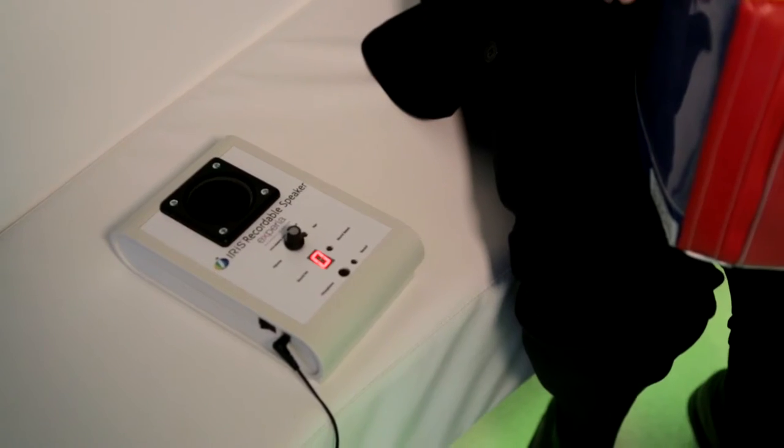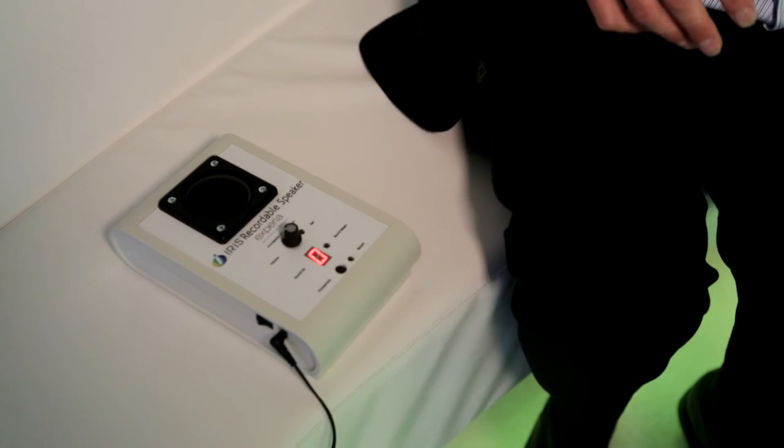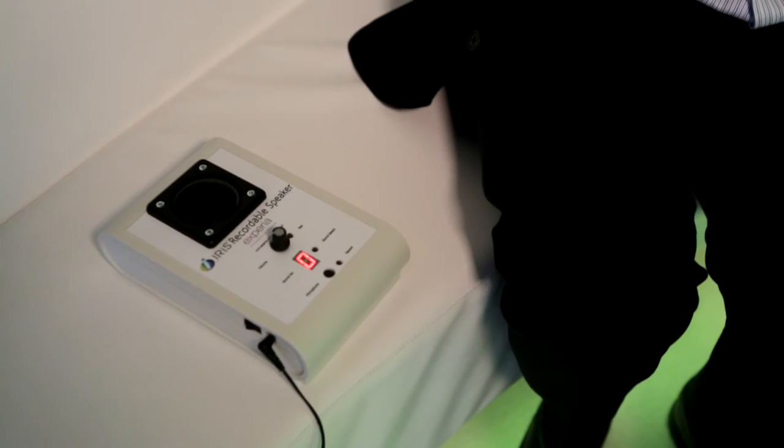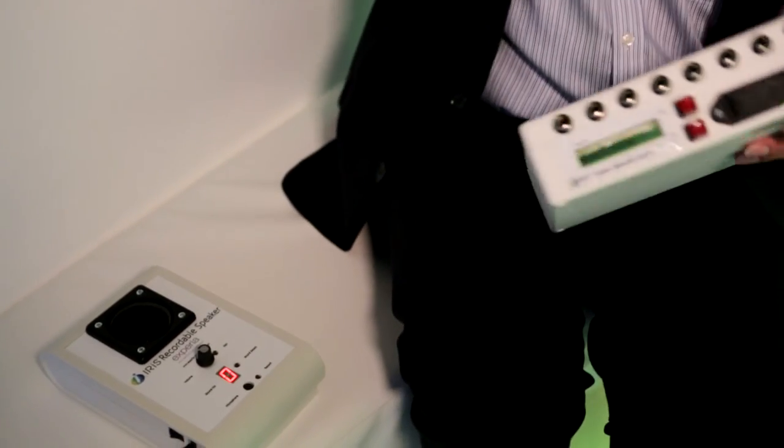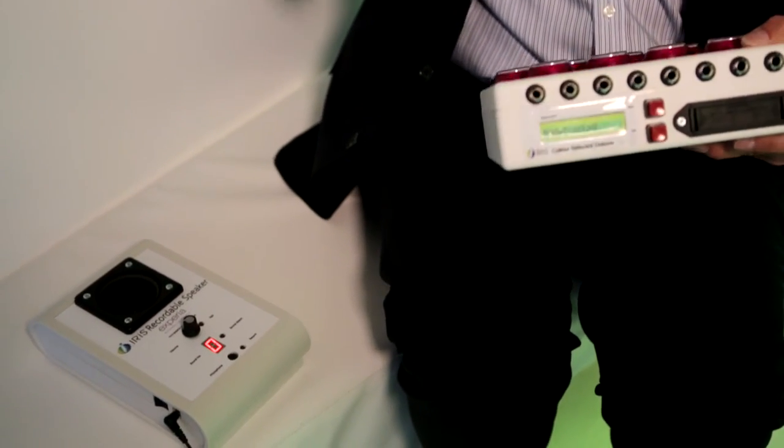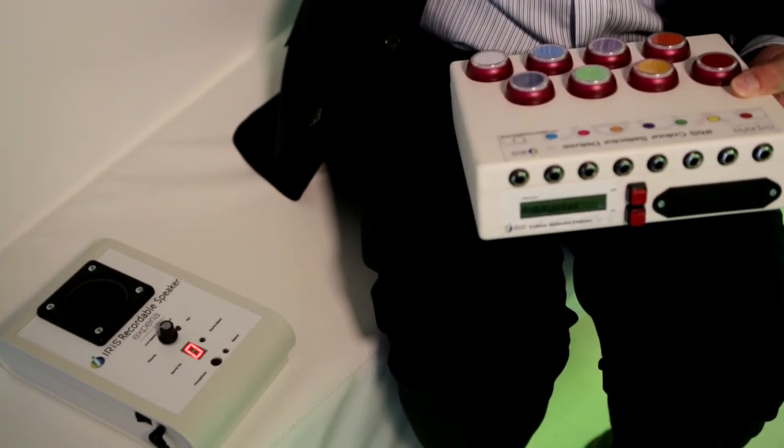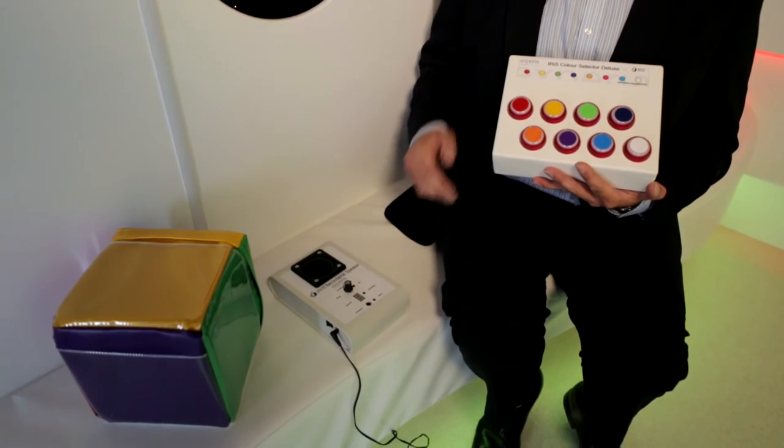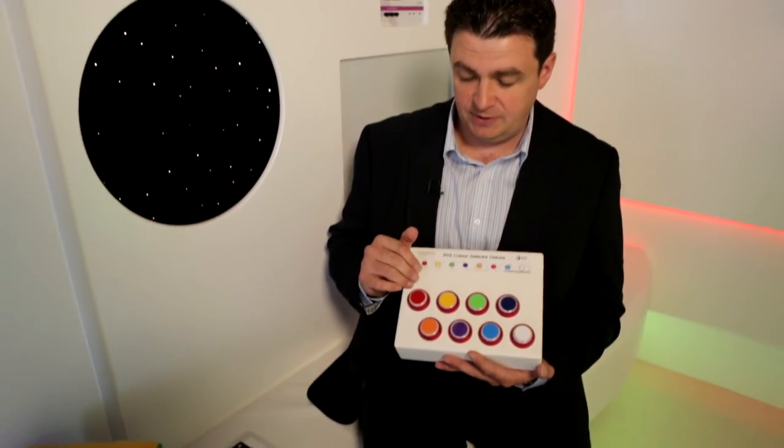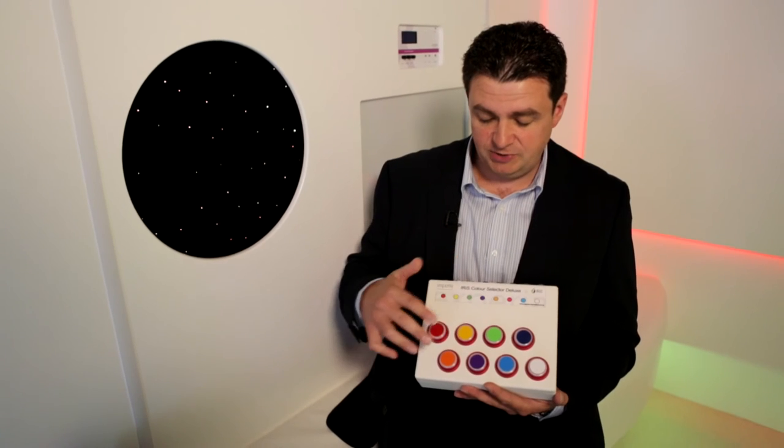It's not just the Iris cube that can control the Iris recordable speaker. As I mentioned before, any Iris talker can control the recordable speaker. Now what I've got is the Iris color selector deluxe. To get this item to control the recordable speaker, all I do is press this switch here and then press any switch on the front of the recordable speaker.